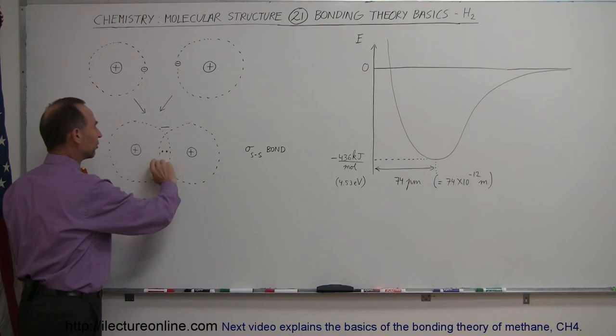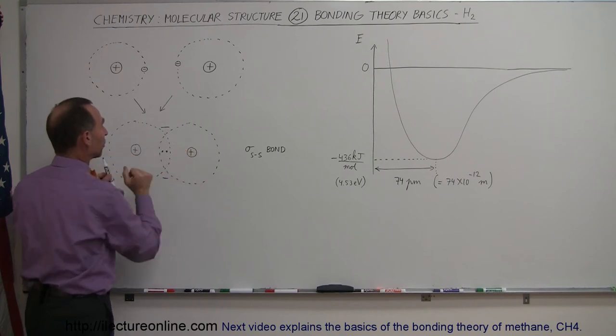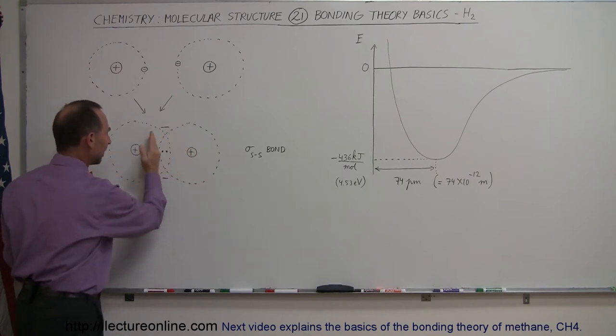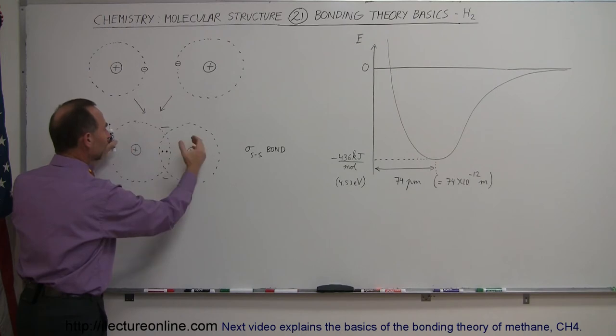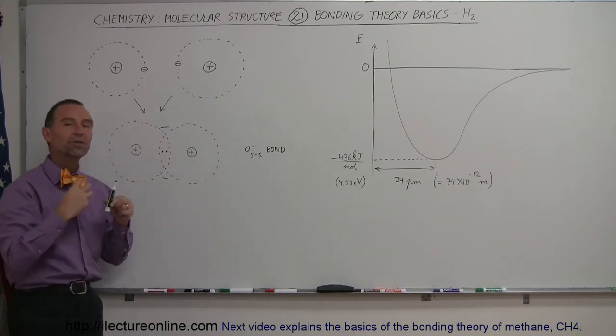And then we have the two positive charges here. So what happens is this negative region here would be a region of highest probability where the two electrons will reside when the two S orbitals overlap. And because of that, this region is more electronegative, these are electropositive, which causes the negative to be attracted to positive, brings the two atoms together, and they fall into the lowest energy state.